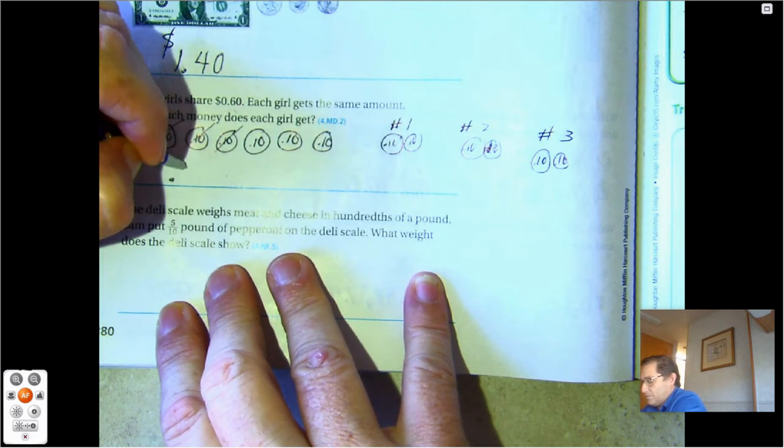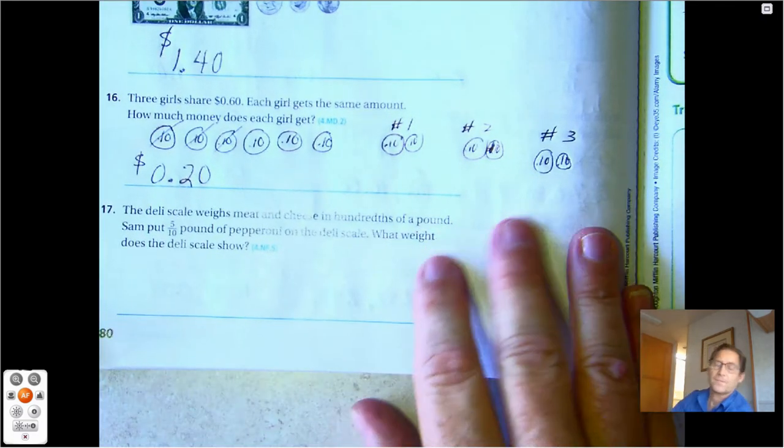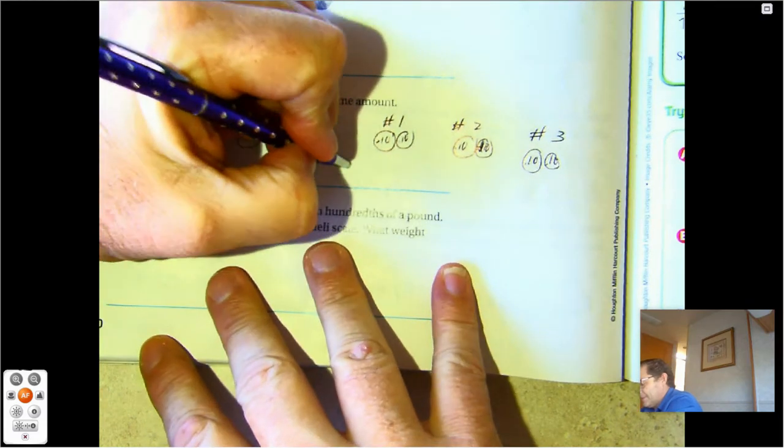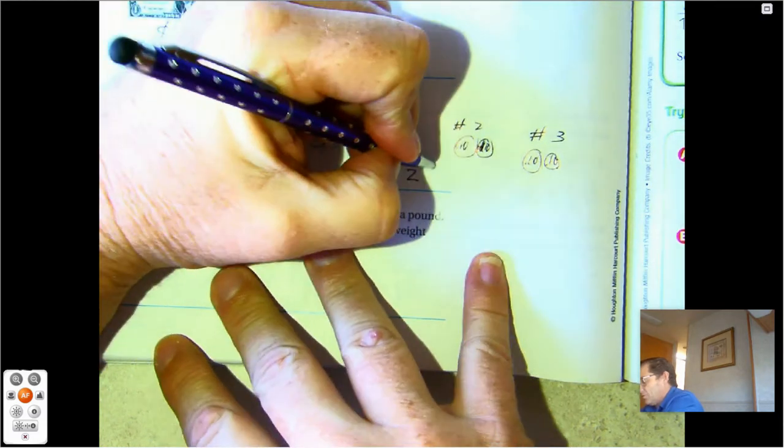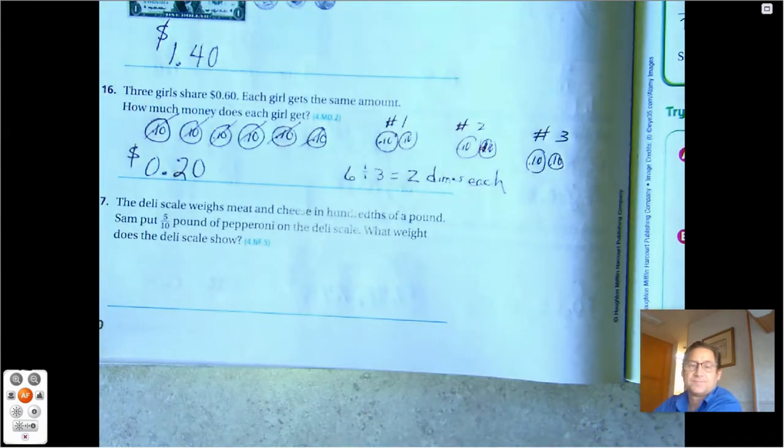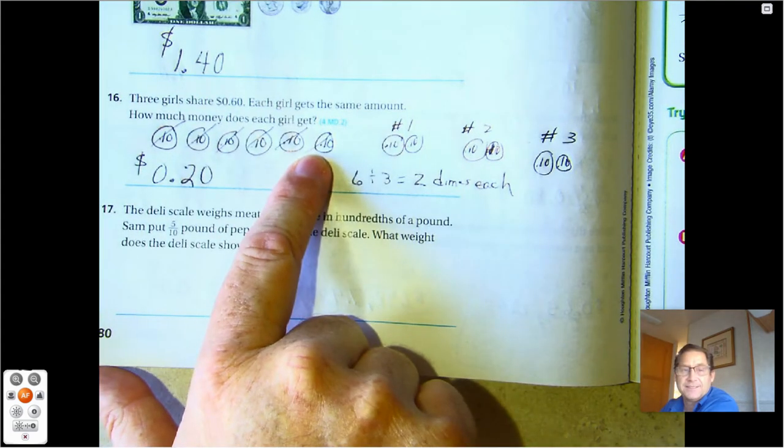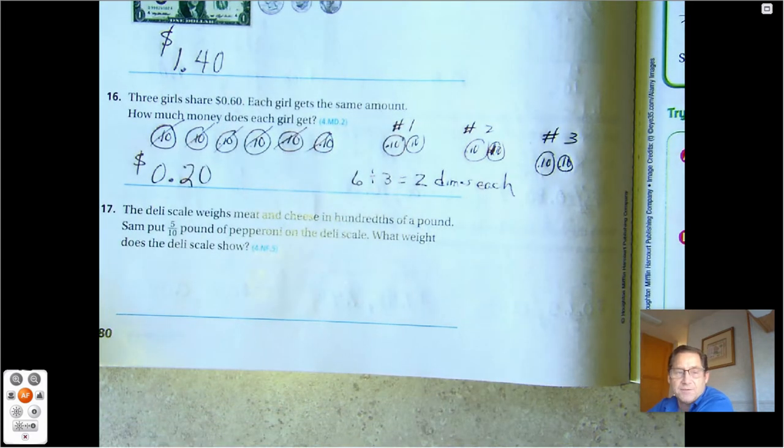Two dimes is twenty cents. I could have also done six divided by three to get two dimes each. Six because there are six dimes in sixty cents. There's three girls. Six divided by three, each girl will get two dimes.